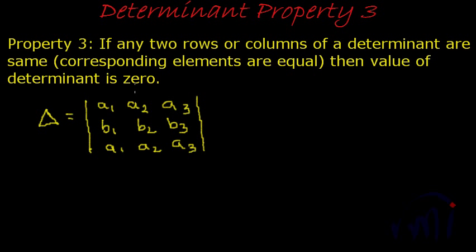Property number three states that if any two rows or columns of a determinant are same, which means their corresponding elements are equal, then the value of determinant is zero. So we don't need to expand it, we can straight away write the value of determinant to be zero.